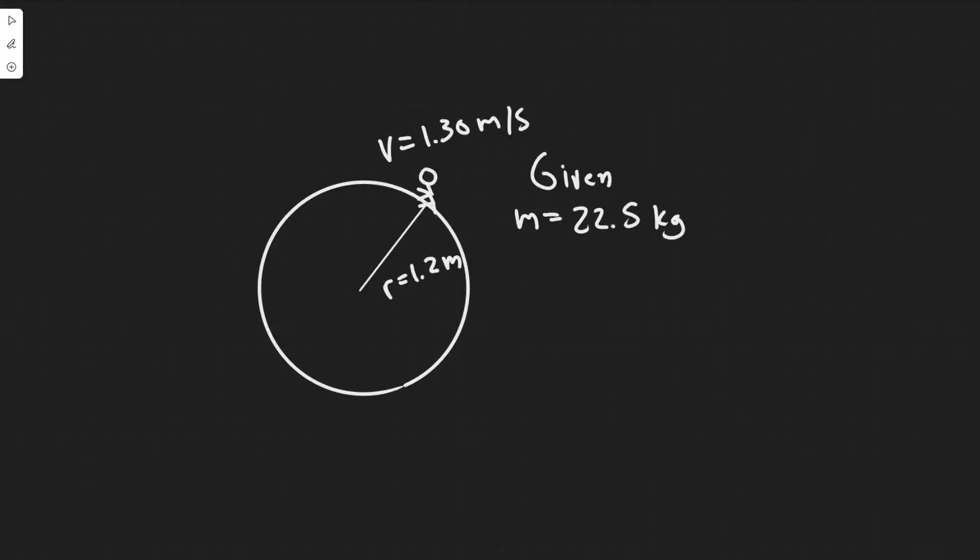Okay, so in this problem we're told a child sitting 1.2 meters from the center of a merry-go-round moves with a speed of 1.3 meters per second.